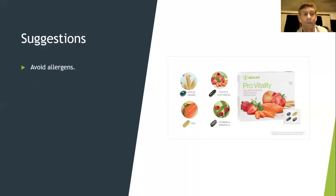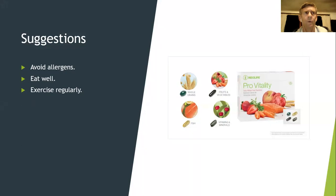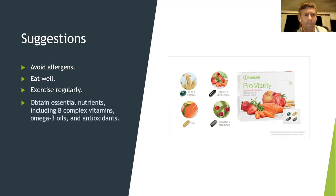Some suggestions: logically, avoid allergens. Eat well. Exercise regularly - and by this we mean do something every day, even if it is just to walk around your house. We all know how creative people got during lockdown, with people running 10-15 Ks around their house. We also need to obtain essential nutrients including the B-complex vitamins, omega-3s, and antioxidants, most of which you will get from our pro-vitality.